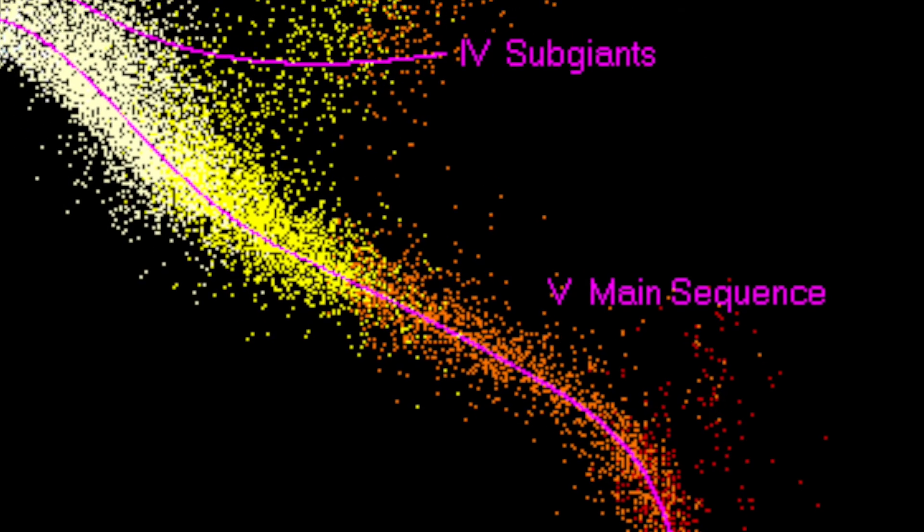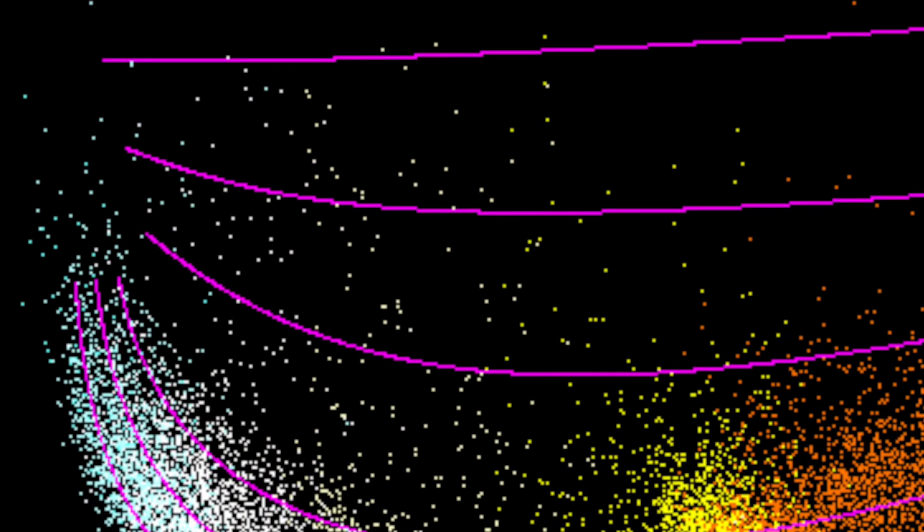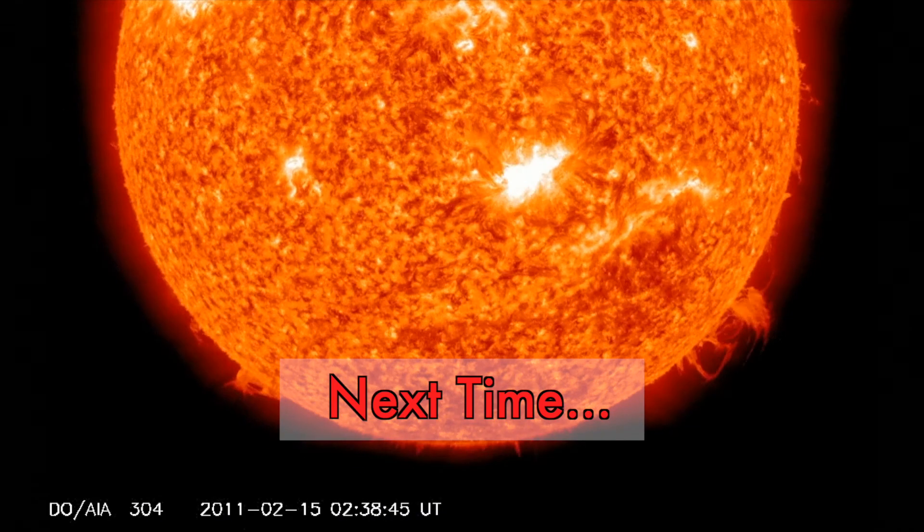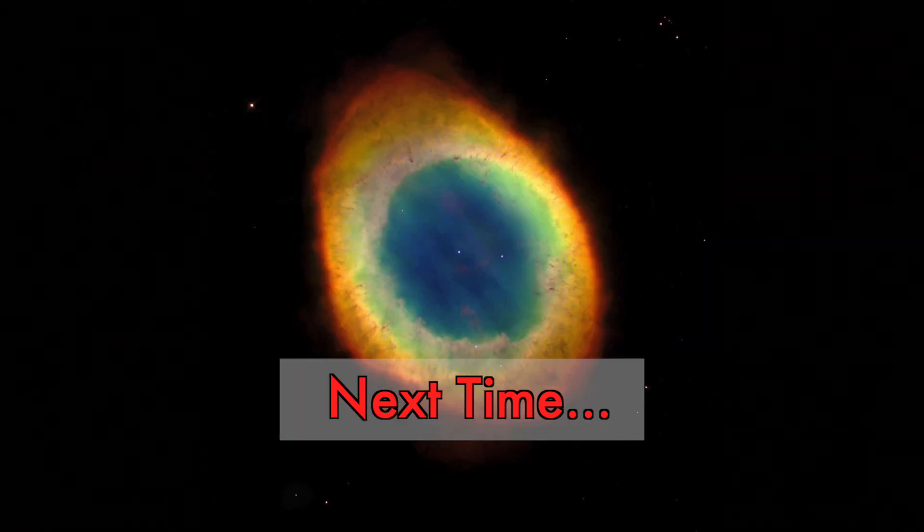Main sequence stars have tons of different qualities though. They vary greatly in size, color, temperature, and more. In our next video, we'll talk about the life and death of these stars.